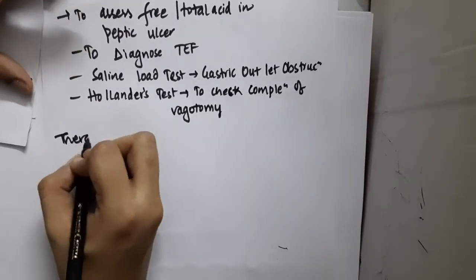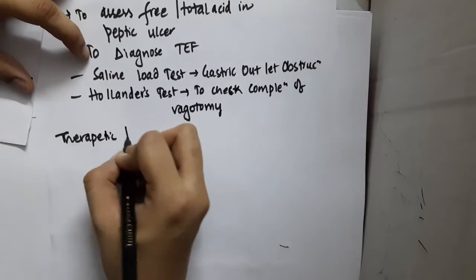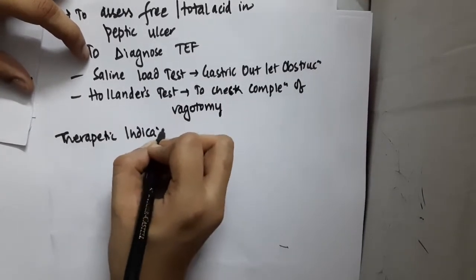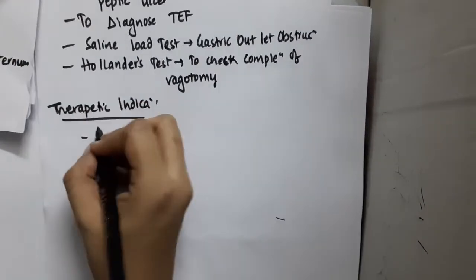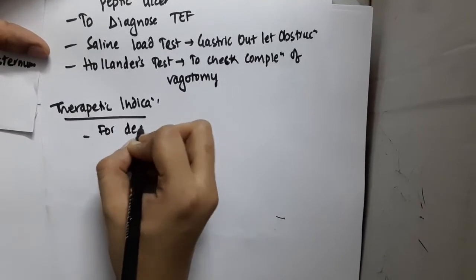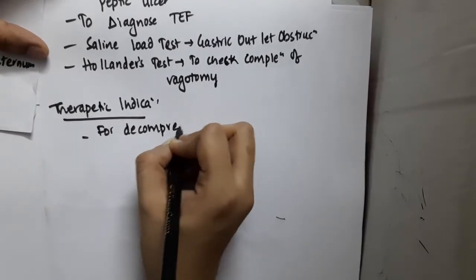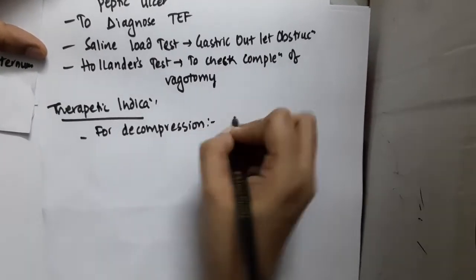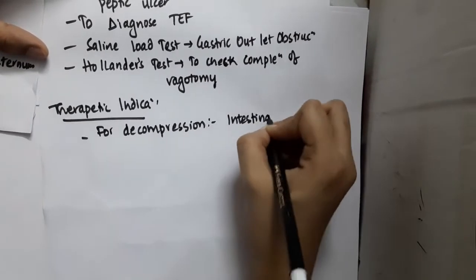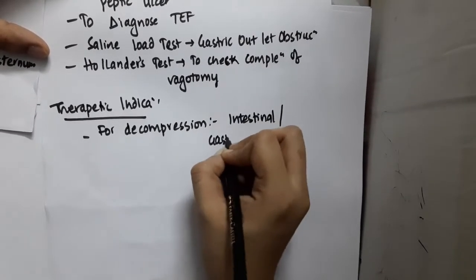What are the therapeutic indications? Therapeutic indications of Ryle's tube include decompression. It is used for decompression in intestinal obstruction or gastric outlet obstruction.